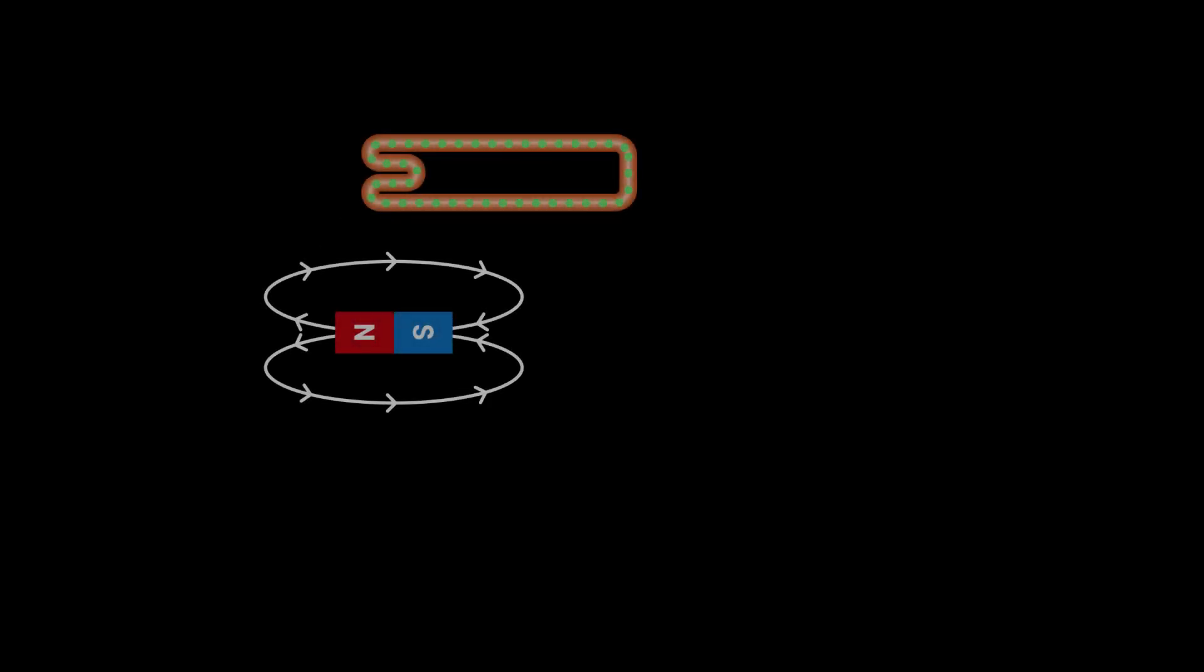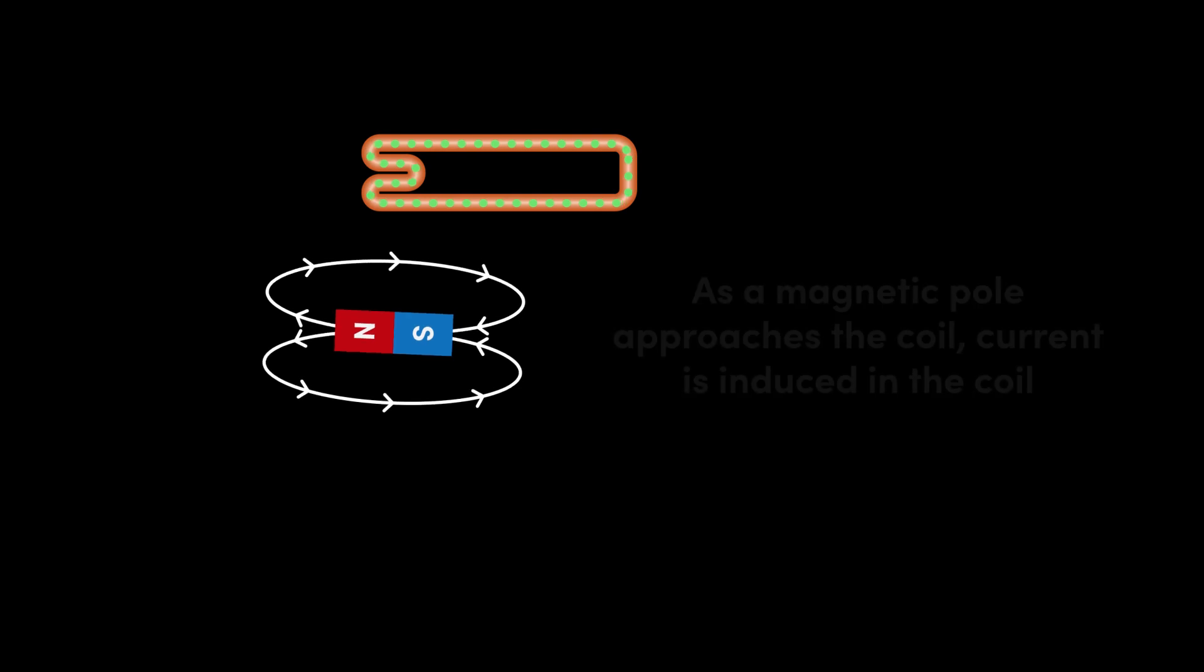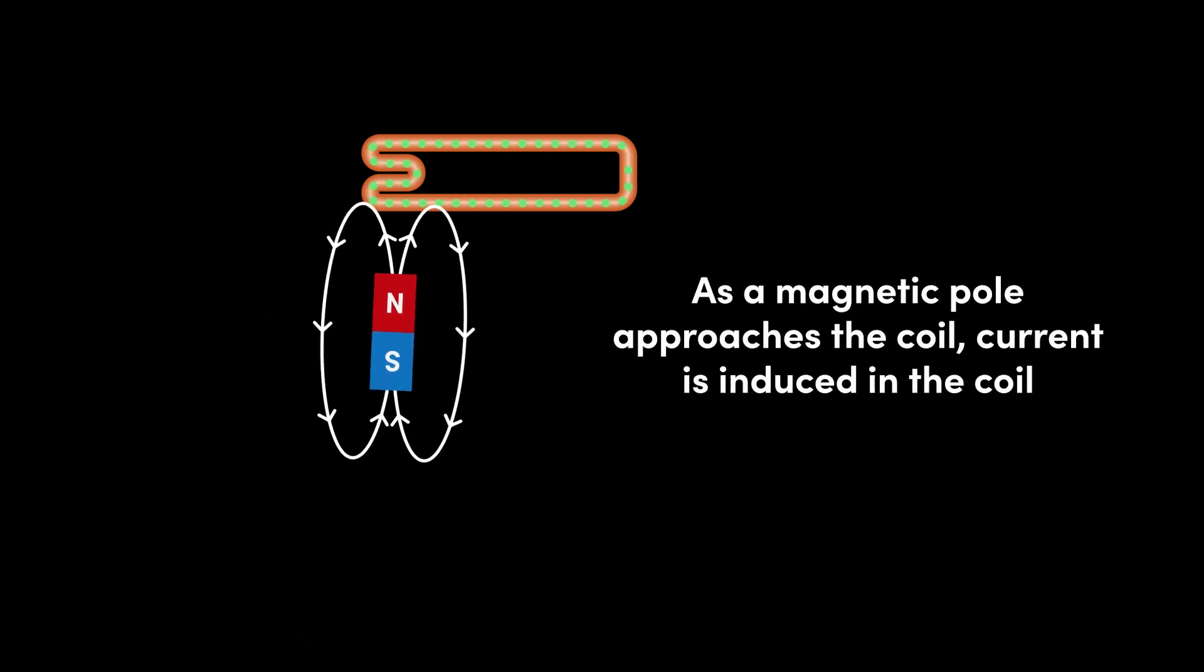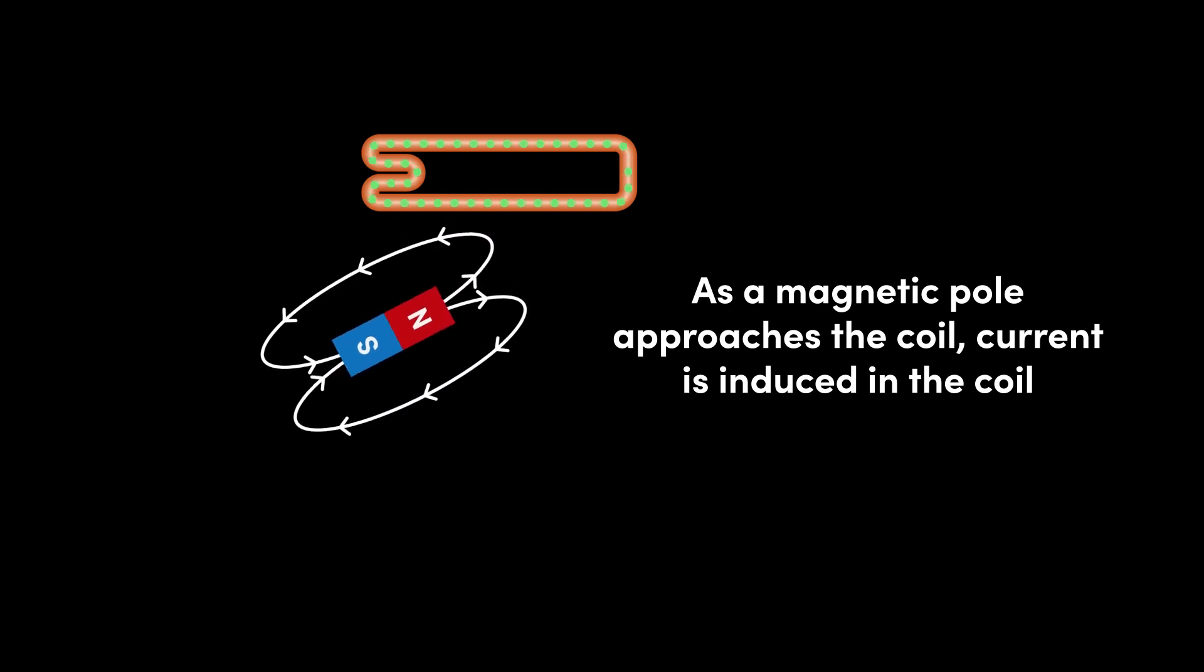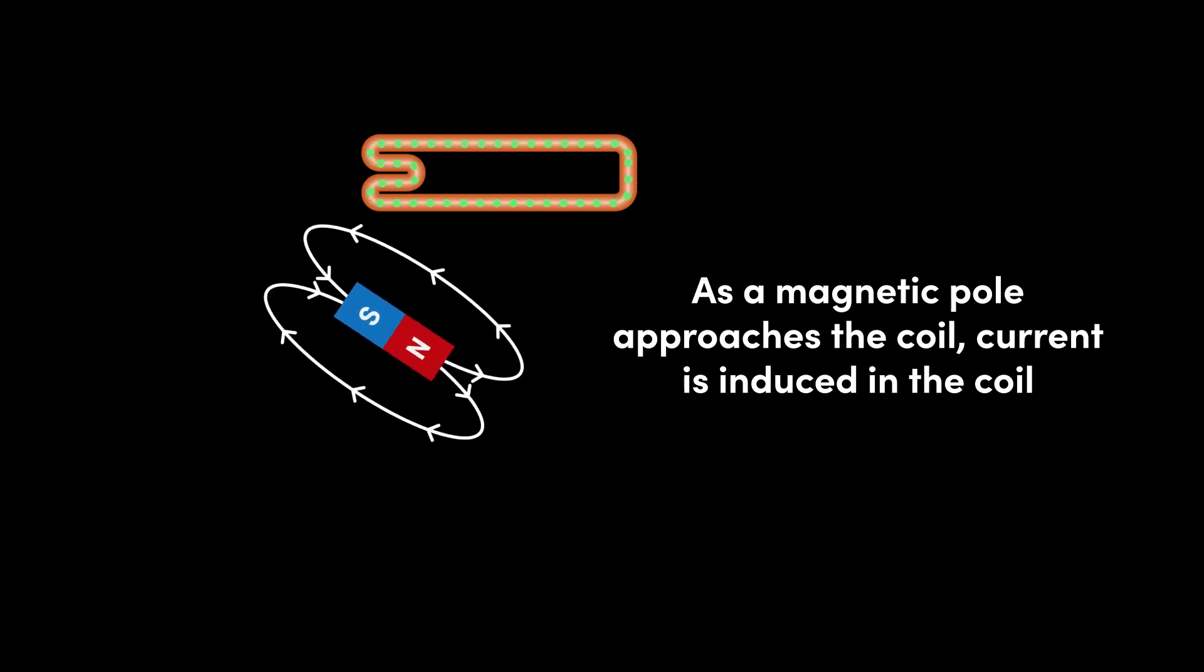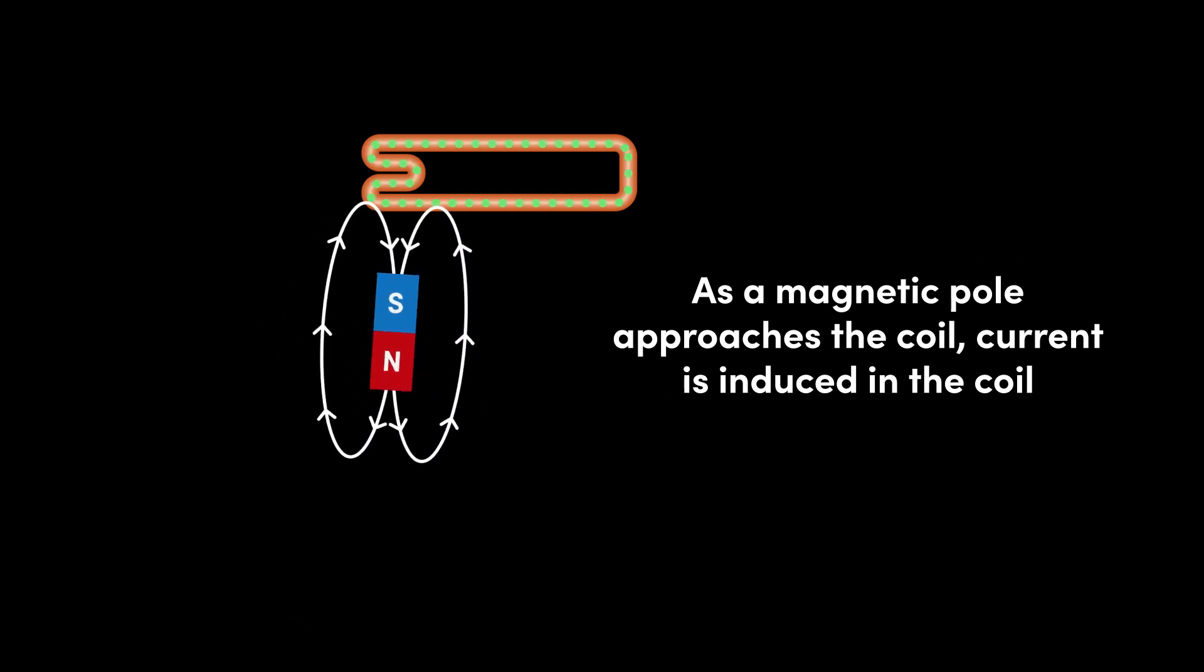When the center of the magnet faces the coil, no current is generated. As the magnet rotates and the north pole approaches the coil, the increasing strength of the magnetic field induces current in the coil, with electrons in the coil repelled away from the magnet.